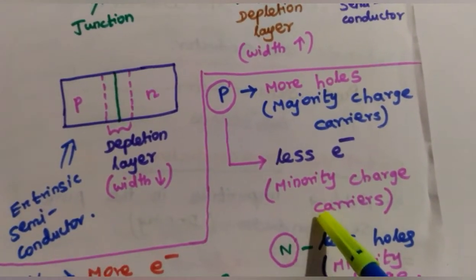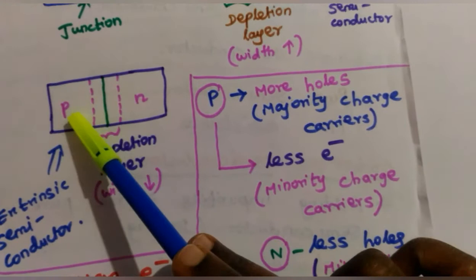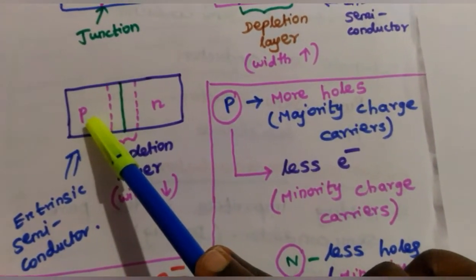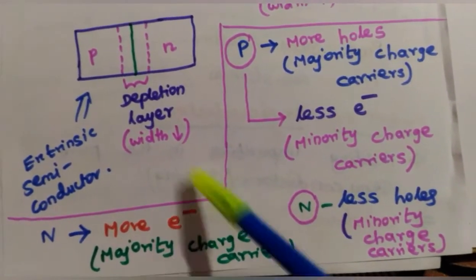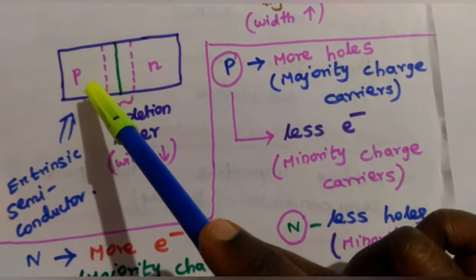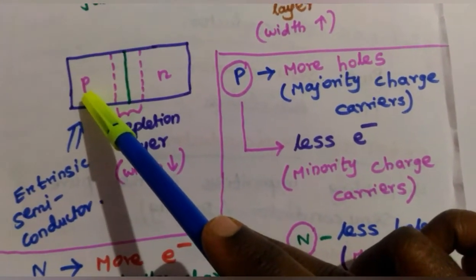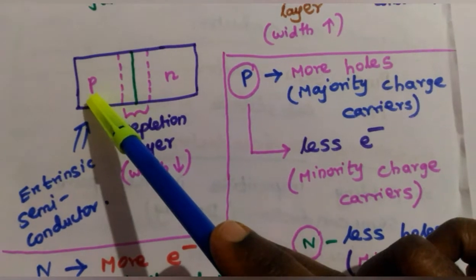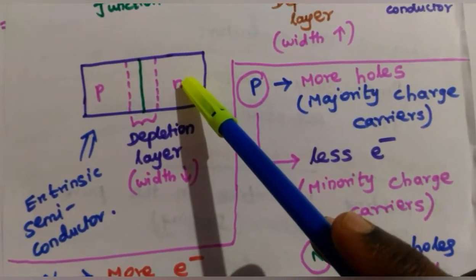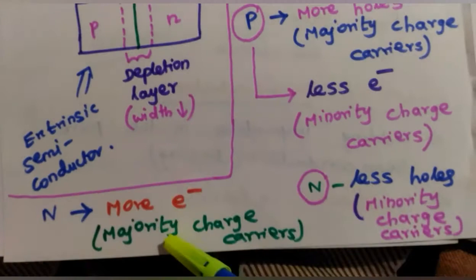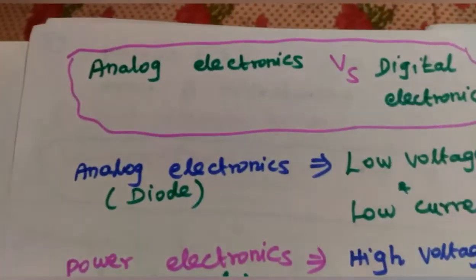Less electrons are present in the P-type layer — these are called minority charge carriers. Both P and N layers have holes and electrons. The P layer has more holes as the majority charge carrier, and in the N-type material, electrons are the majority carriers while holes are the minority charge carriers.